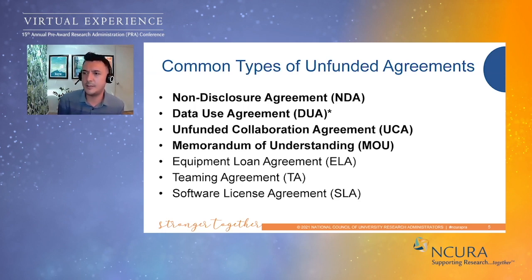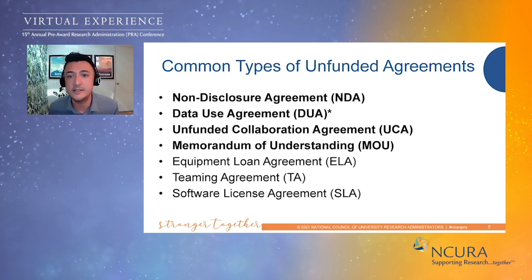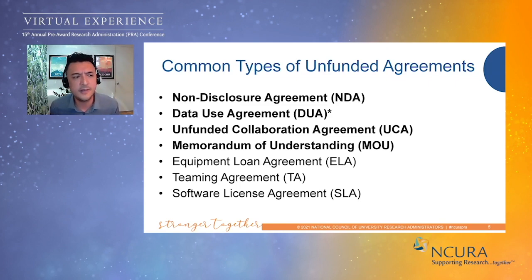Some less common agreement types include equipment loans — for example, equipment purchased on a federal grant that we might loan to another institution or a postdoc continuing their research at another campus. Teaming agreements are something I've seen more of lately: some federal agencies and non-profits ask that before you even submit a proposal, you provide a teaming agreement outlining the rights and responsibilities of all collaborators in a consortium. Some even include an addendum covering what happens post-award, like an IP sharing agreement.